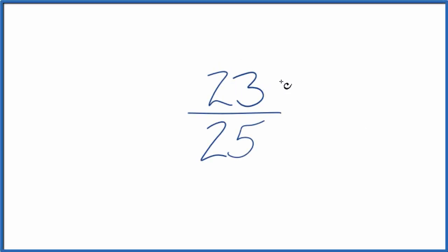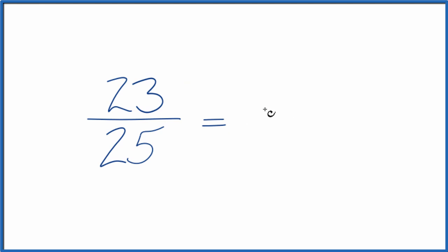Let's write the fraction 23/25 as a decimal. There's two ways we could do this. You could just divide 23 by 25 on a calculator. You end up with 0.92.